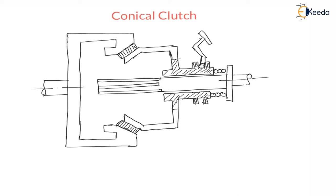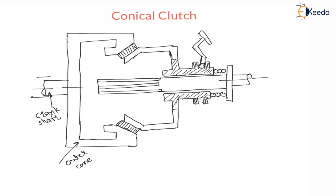But here there is some modification that we have to check. Here it is a driver shaft or a crankshaft which is connected to the engine. Power comes from the engine to the crankshaft, and now it is connected to the outer cone. This is the outer cone in conical clutch.